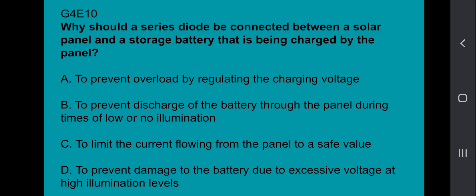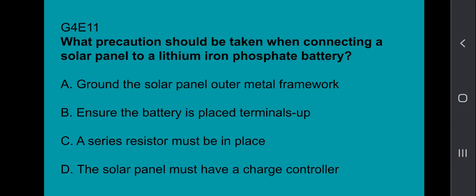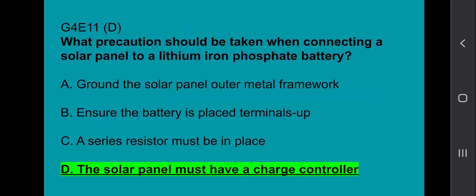G4E10, why should a series diode be connected between a solar panel and a storage battery that is being charged by the panel? To prevent discharge of the battery through the panel during times of low or no illumination. G4E11, what precaution should be taken when connecting a solar panel to a lithium-iron phosphate battery? The solar panel must have a charge controller.